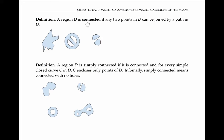Informally, a region D is called connected if any two points in D can be joined by a path in D. So this leftmost region is connected, because any two points in the region can be joined by a path that lies entirely in the region. The next region is also connected — any two points can be joined by a path in the region.